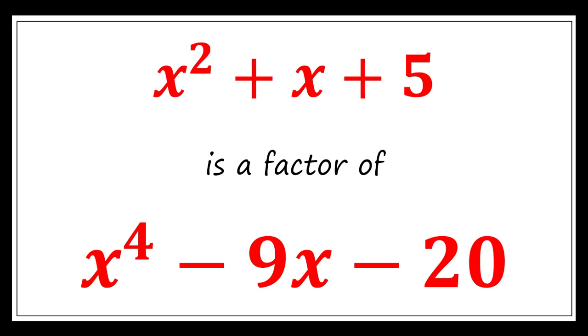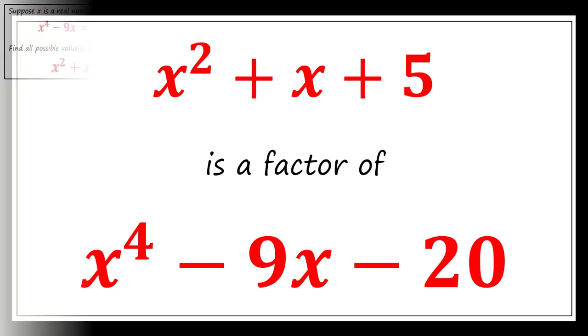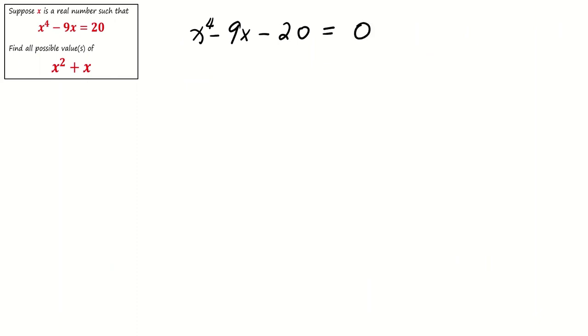Given this clue, you can easily find the other factors, whether through long division or another valid method. In fact, x^4 - 9x - 20 can be factorized as (x^2 + x + 5)(x^2 - x - 4).